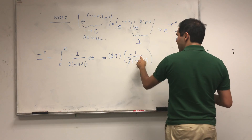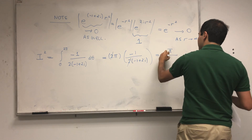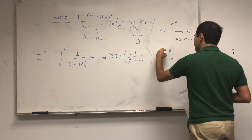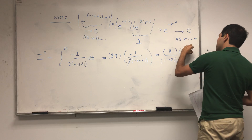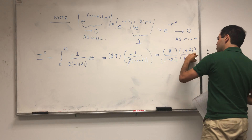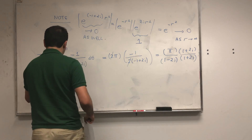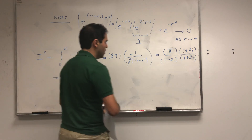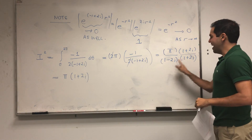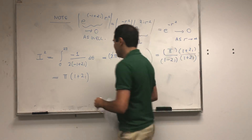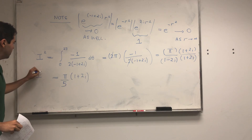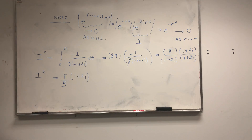The 2's cancel out, and this becomes π times 1 over minus 1 plus 2i. It's kind of ugly to have i's in the denominator, so let's multiply by the conjugate: times 1 plus 2i over 1 plus 2i. Then we get π times 1 plus 2i, and the denominator is 1 squared plus 2 squared equals 5. So I squared equals π over 5 times 1 plus 2i.